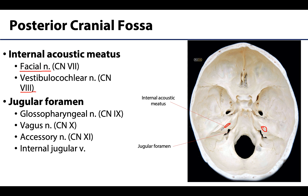One of the most notable foramina are the jugular foramina, located between the temporal bone and the occipital bone. This is where the sigmoid sinus drained the brain during life, leading into the jugular foramen, where there is a name change and the internal jugular vein, or IJV, begins. Additionally, three cranial nerves exit the skull here: the glossopharyngeal nerve or cranial nerve nine, the vagus nerve or cranial nerve ten, and the accessory nerve or cranial nerve eleven, which innervates the sternocleidomastoid and trapezius muscles.